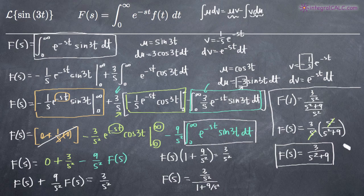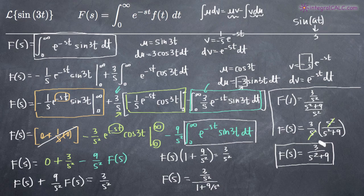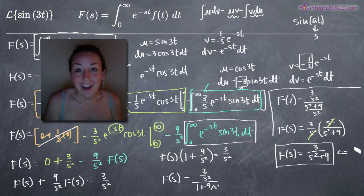If you look at a table of Laplace transforms, you'll see the formula for the Laplace transform of sine of at is a over s squared plus a squared, where a is a constant. With a equal to 3, that matches exactly what we got using the definition. I hope this video helped, and I'll see you in the next one.